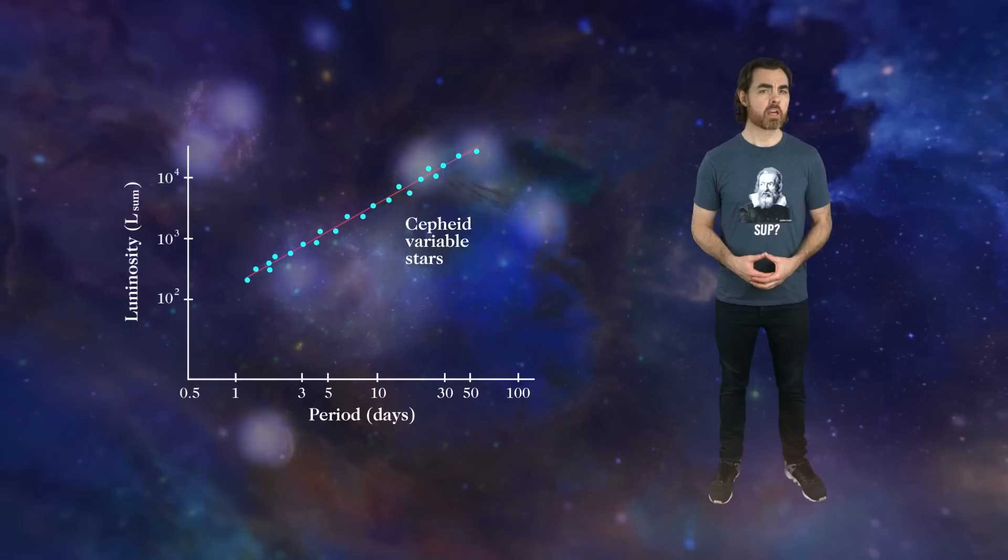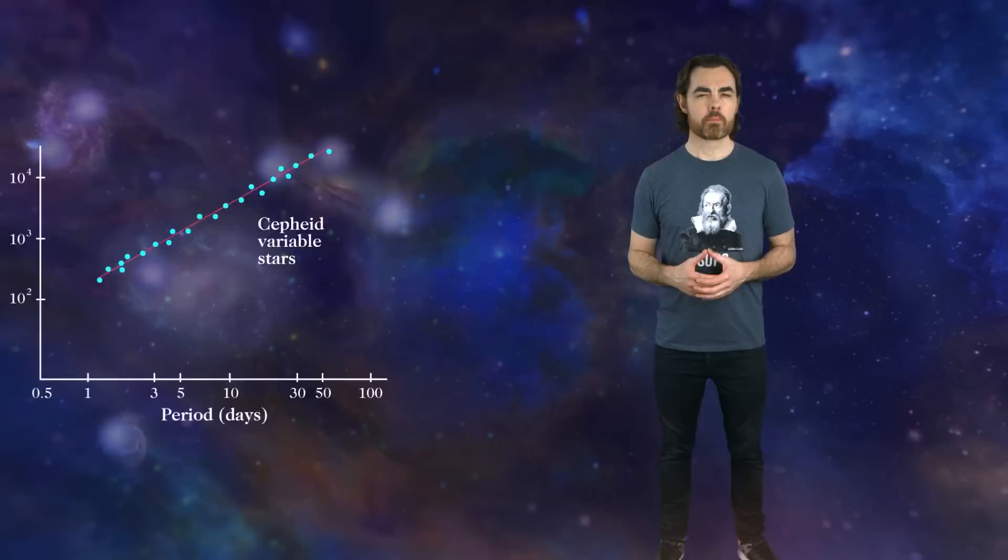Hubble used Cepheid variables. Giant stars that are in the last phases of their lives. They pulsate with a period that's related to their true brightness, as discovered by Henrietta Leavitt. Measuring Cepheid periods in other galaxies gave Hubble their true brightnesses as though undimmed by distance.